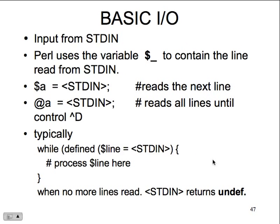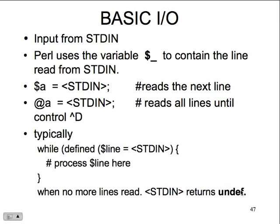Basic IO: Perl uses the variable $_ to contain the line read from standard input. It reads the next line; reads all lines until Control-D. If we want a single line, use the scalar variable; if we want all lines, use the array and each line gets a new array item. A typical example: 'while (defined($line = <STDIN>))' then process each line. When no more lines are read, it returns undefined because there's nothing left.